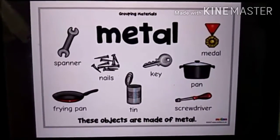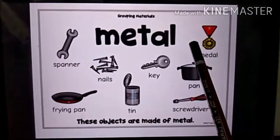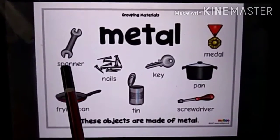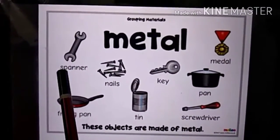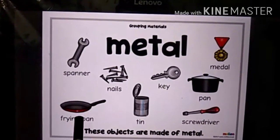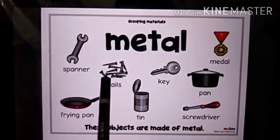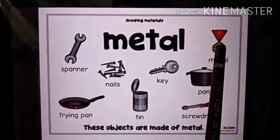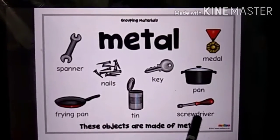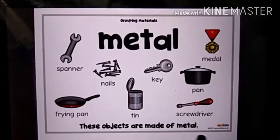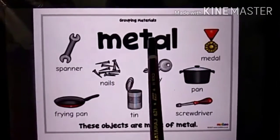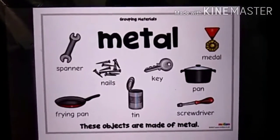Our next material is metal. A spanner — which is something we use to open or tighten screws — frying pan, nails, skin, key, metal pan, screwdriver — all these products are made out of metal.